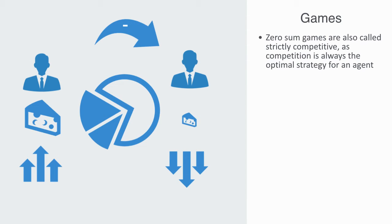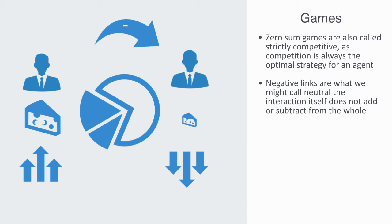Negative links are what we might call neutral. The interaction itself does not add or subtract from the whole. In these zero-sum games, the whole pie is staying the same. What is changing is who gets what. The interaction defines who gets what.